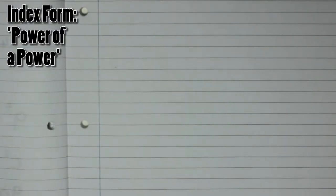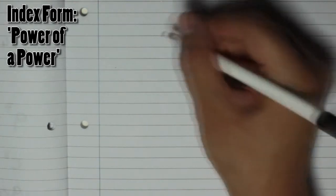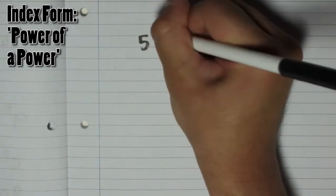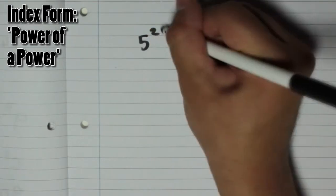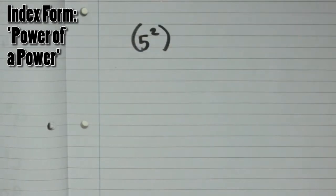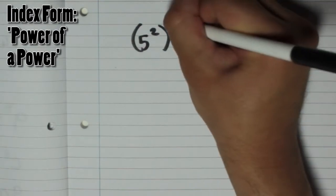Now you can also have numbers written in index form, so numbers with a power. For example, 5 to the power of 2, and then that can be also to another power, for example, to the power of 3.